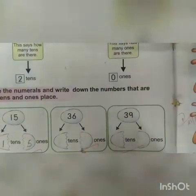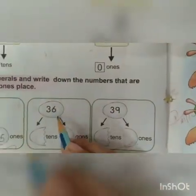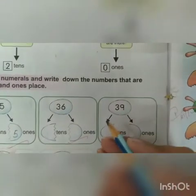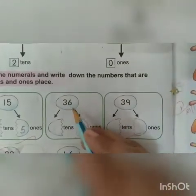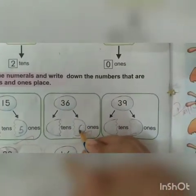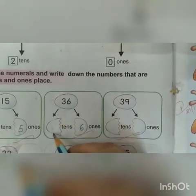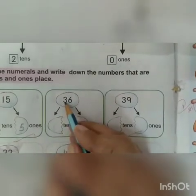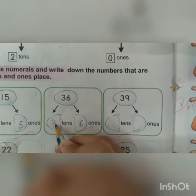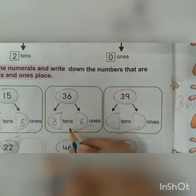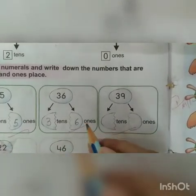Come to the next. Which number is this? 36. How many 1s are here? 6. We will write 6 here. How many 10s are here? 3. We will write 3 here. 3 tens, 6 ones. 36.